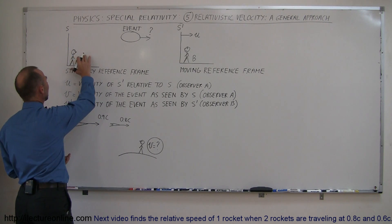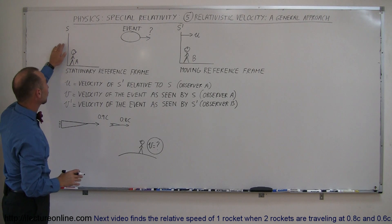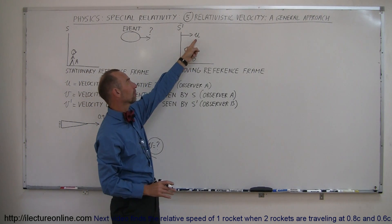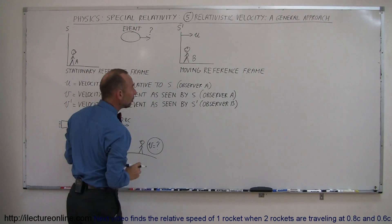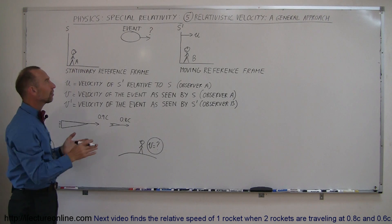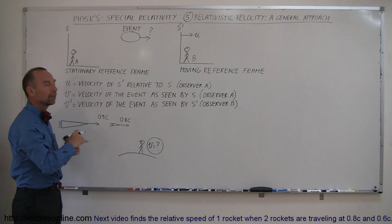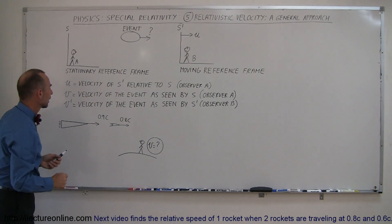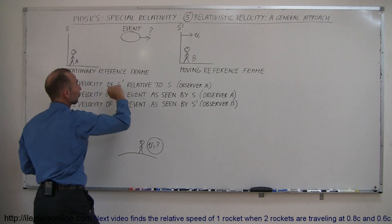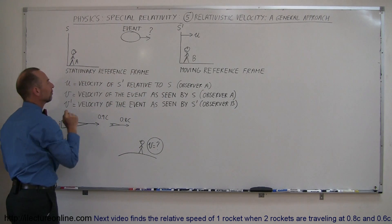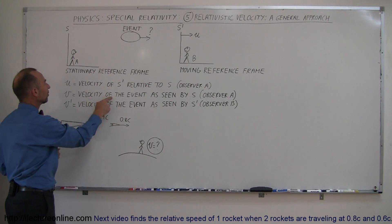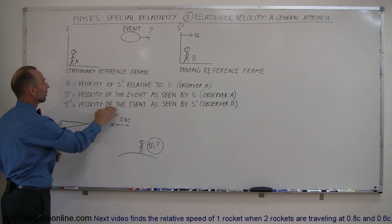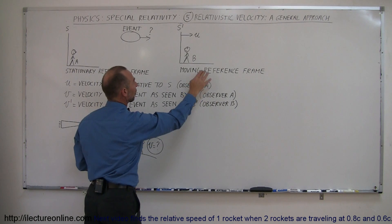For example, let's say we have observer A in a reference frame called S — we call S the stationary reference frame, so this is not moving. We have another observer B who is on a moving reference frame, moving to the right at velocity U. Both observers are looking at an event which may be moving in any given direction. The question is how fast is that event moving relative to A and relative to B? We let U be the velocity of the moving reference frame relative to the stationary reference frame. V is the velocity of the event as seen by observer A in the stationary reference frame, and V prime is the velocity of the very same event as seen by S prime, the observer on the moving reference frame. V and V prime will not be the same.